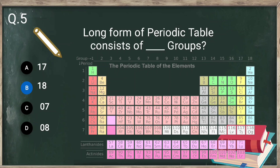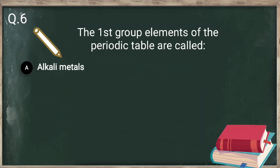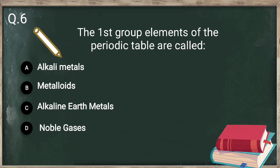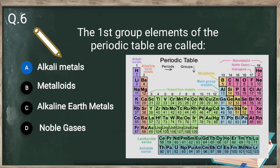Question number 6: the first group elements of the periodic table are called — alkali metals, metalloids, alkaline earth metals, or noble gases? The first group elements are known as alkali metals: hydrogen, lithium, sodium, potassium, rubidium, cesium, and francium. The second group elements are alkaline earth metals. Groups 3 to 12 are transition metals. Group 13 is the boron family, group 14 the carbon family, group 15 the nitrogen family, group 16 the oxygen family, group 17 halogens, and group 18 noble gases.